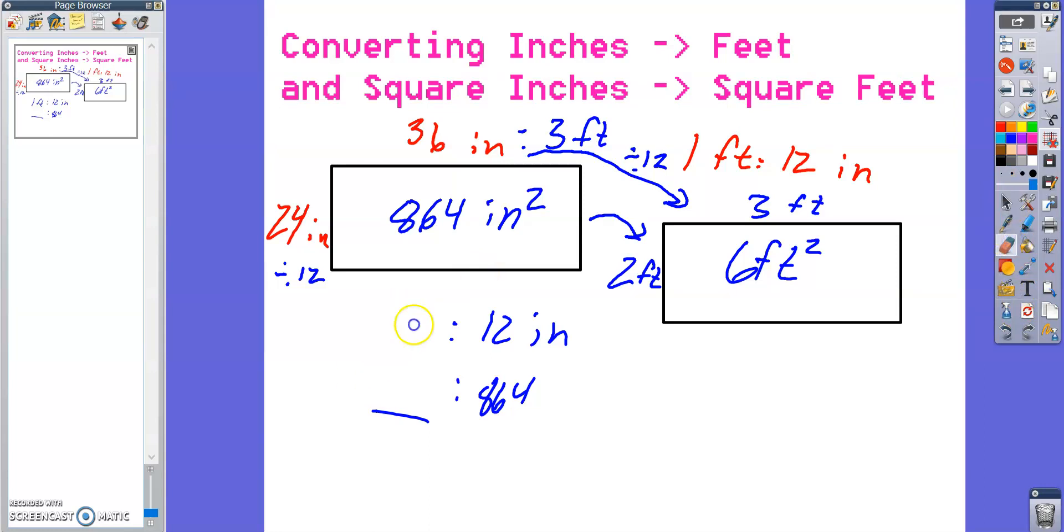Since you've already done inches times inches to give you square inches, if you want to get from feet to feet to get square feet, each of these has to divide by 12. So there's 12 inches in a foot. So that's 12 times 12, which is a division of 144.